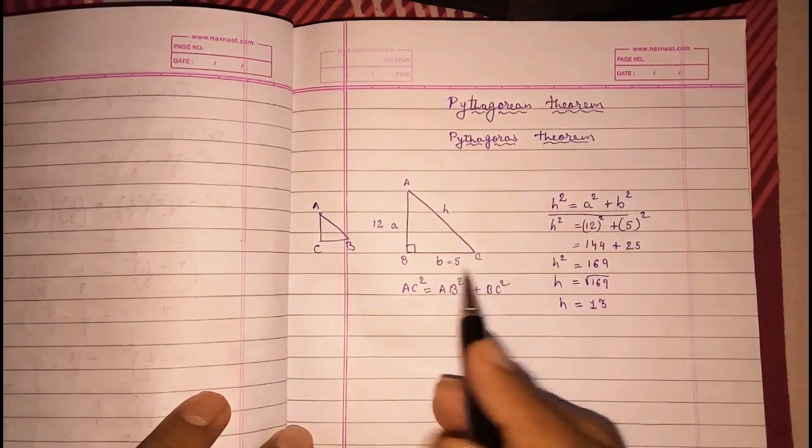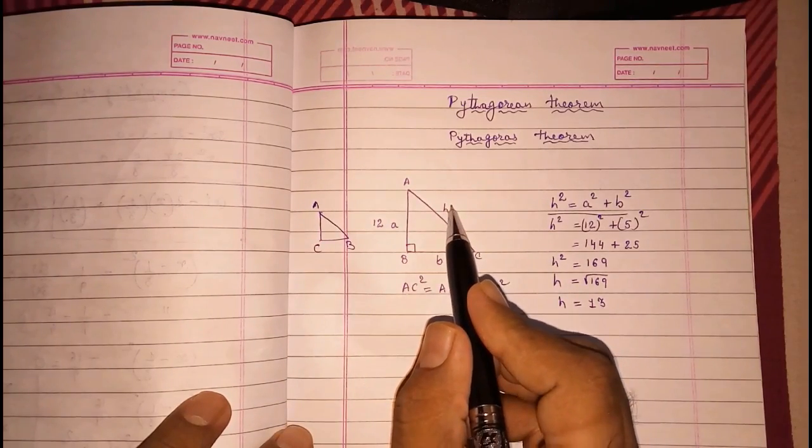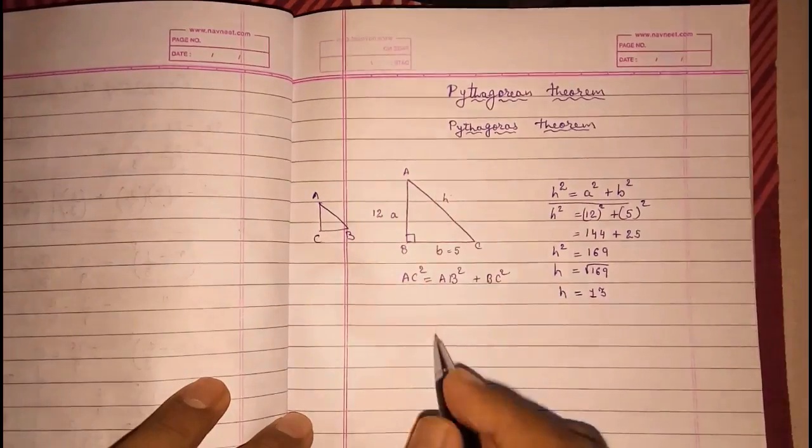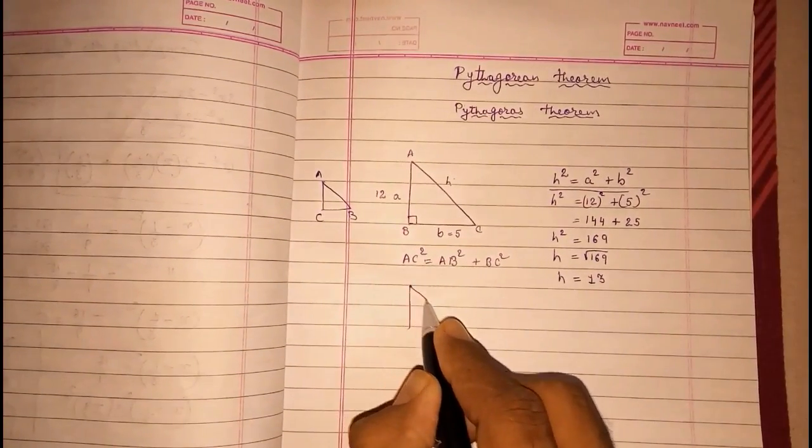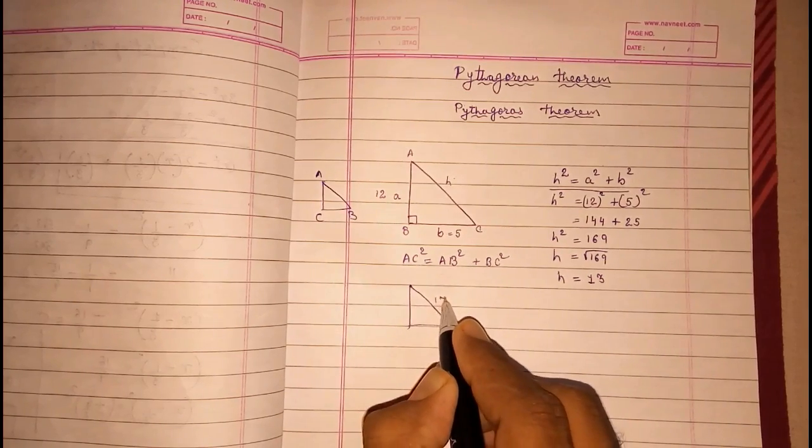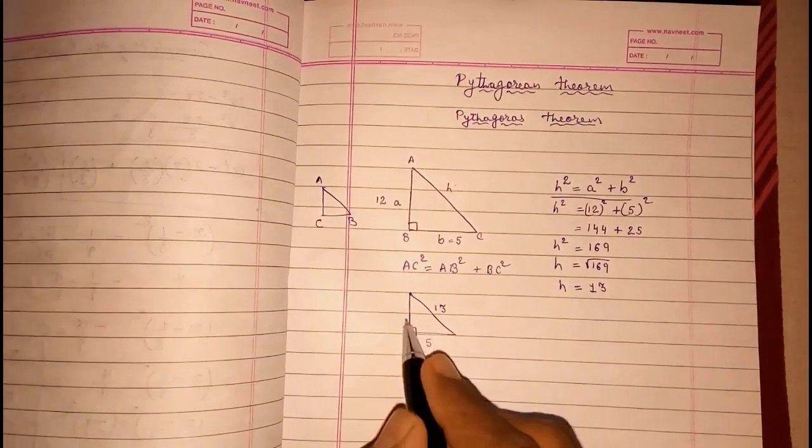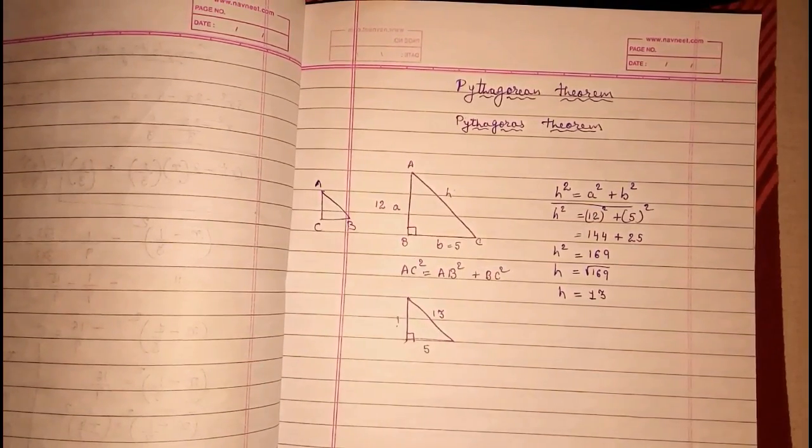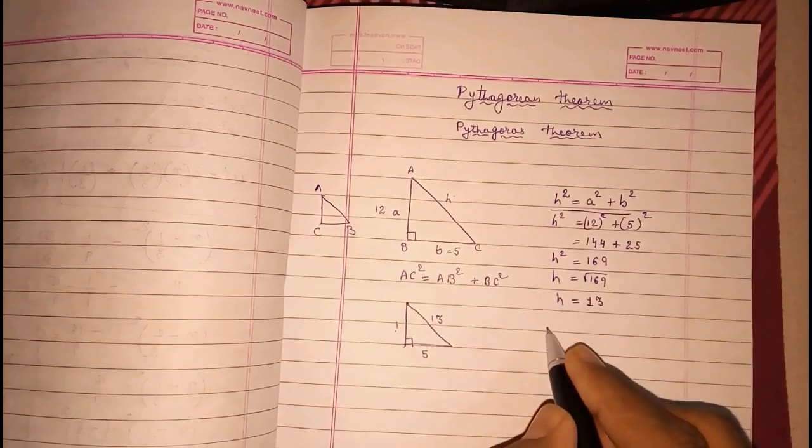Now, general problem with the student is—first problem is this. And the second problem, they don't understand what—sometimes H is given to you and B is also given. Look here, I am drawing it one more time, a triangle. Now, 13 hypotenuse is given to you, one side 5 is given, then you have to find this.